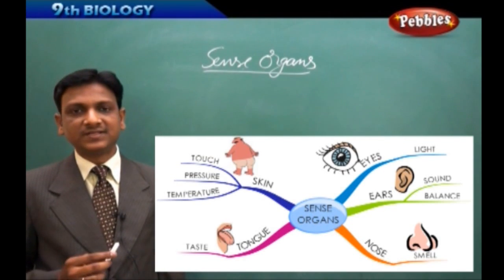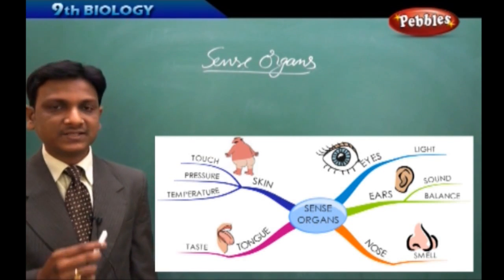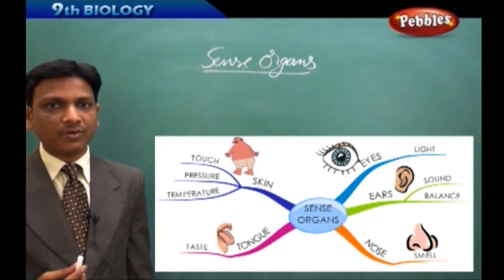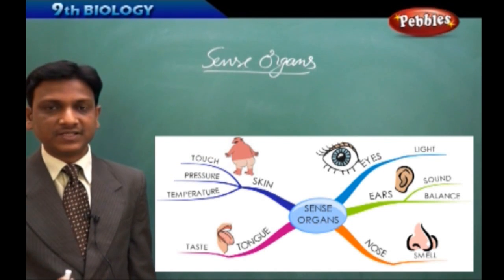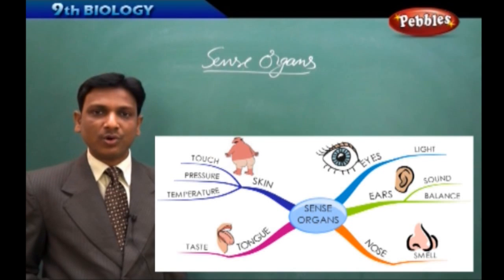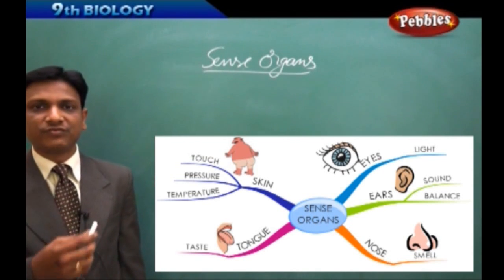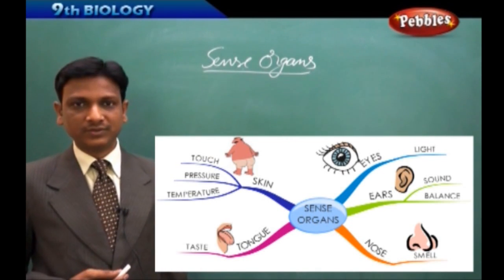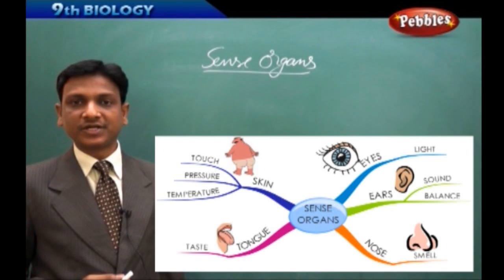Every organism needs sense organs to get its primary needs, because without satisfying the primary needs, no organism can live. What are the primary needs of an organism? Food, water, and shelter or protection from the environment.